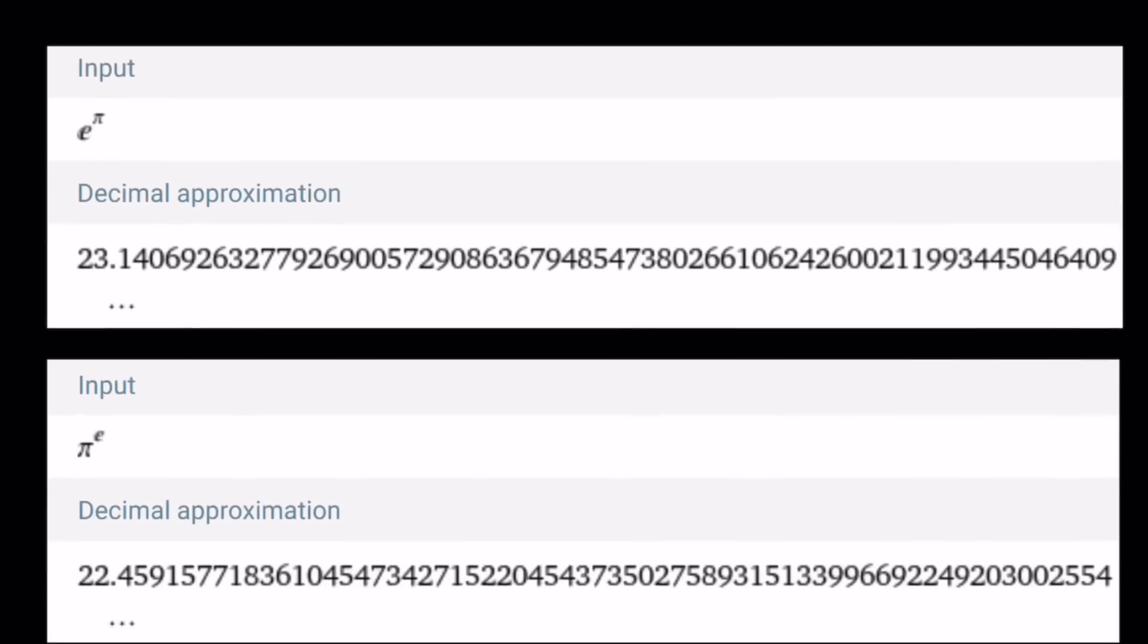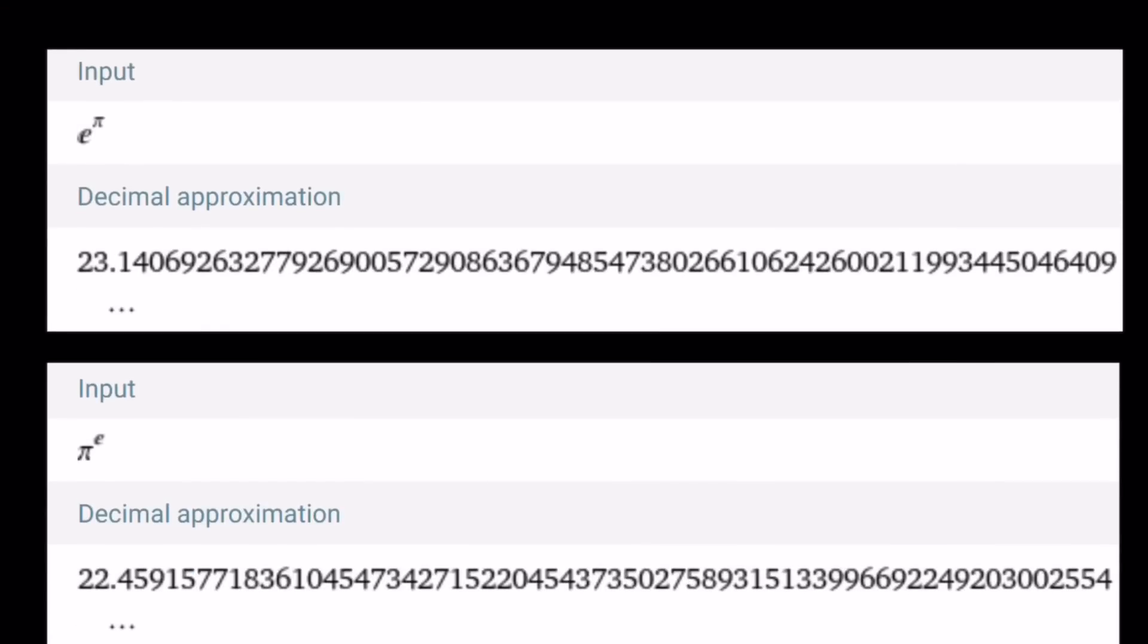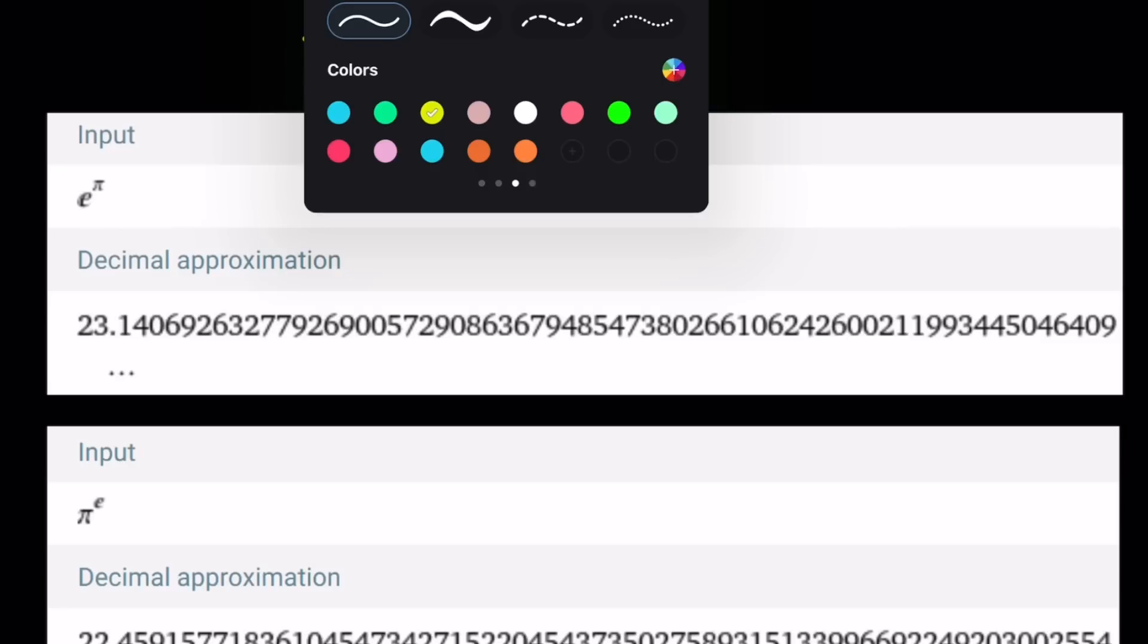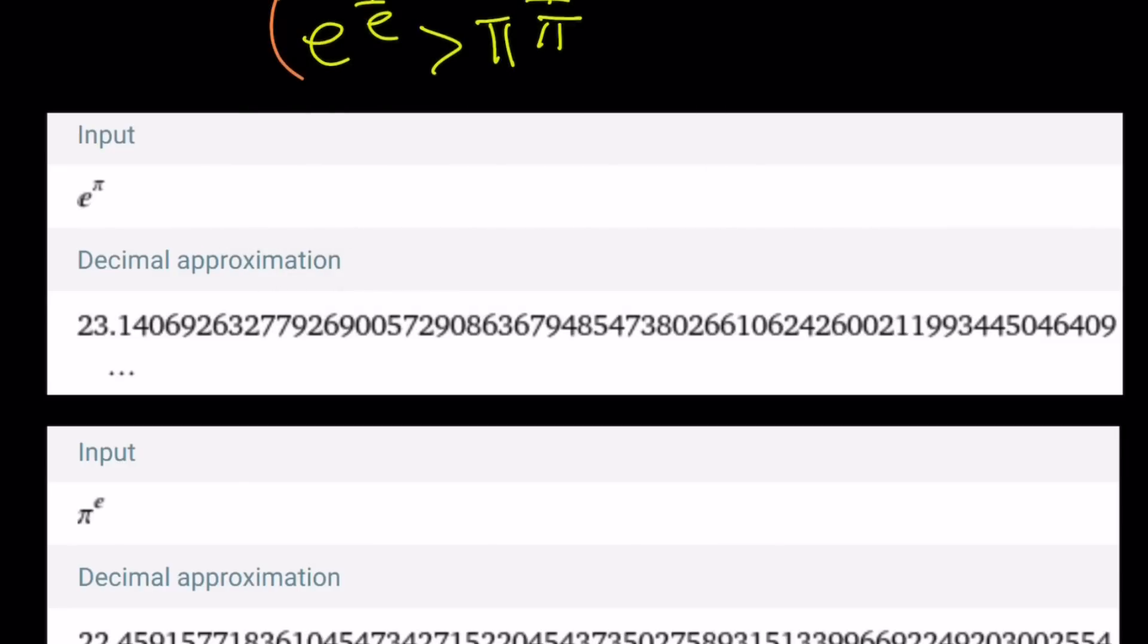So here's the numerical values. As I said earlier, the larger value is going to be, oh, by the way, I forgot to mention, because e to the power 1 over e is greater than π to the power 1 over π, we can go ahead and raise both sides again to the power πe, and that's going to give us what we want. πe is positive, all is good. It's going to give us e to the π greater than π to the power e. As you can see here, it's slightly larger.